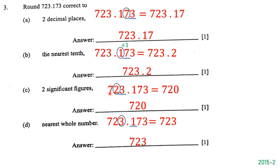Next, we want to write 7723.173 correct to two significant figures. This number has six significant figures: 7, 7, 2, 3, 1, and 7 — all non-zero digits are significant. The first significant figure is 7 and the second is 7, so we circle the second 7 and underline 2 to its right. Since 2 is less than 5, we do not round up. We keep 7 and 7, turn 2 into 0, and drop everything else. The answer is 7700.